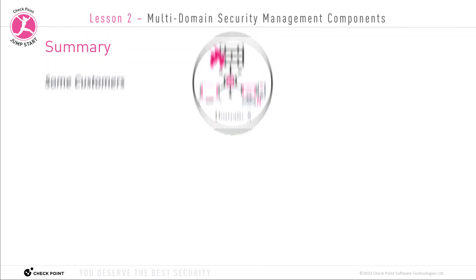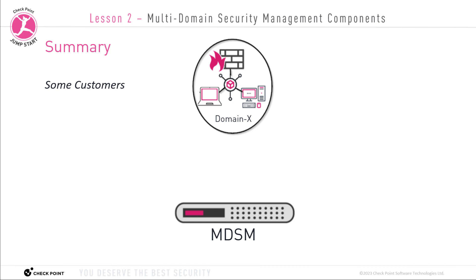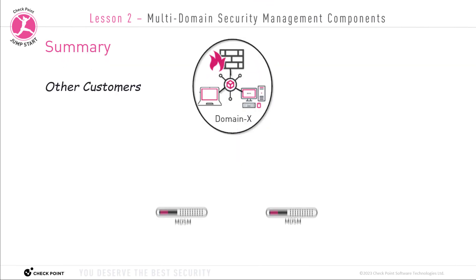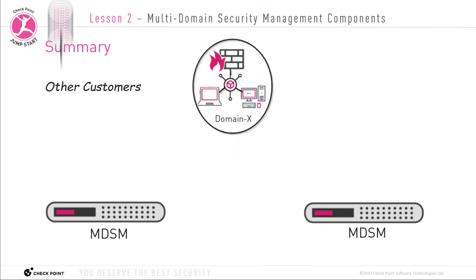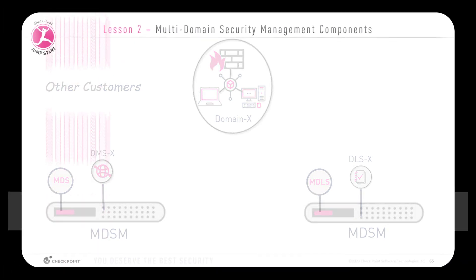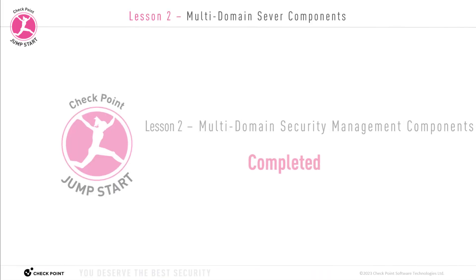Some customers use only one appliance, installing only the MDS server, where each DMS also captures logs for its appropriate domain. Other customers use two appliances: one with the MDS server and DMSs to manage each respective domain, and a second with the MDLS multi-domain log server containing DLSs to store logs for each separate domain. Thank you for watching. We'll see you in the next video.